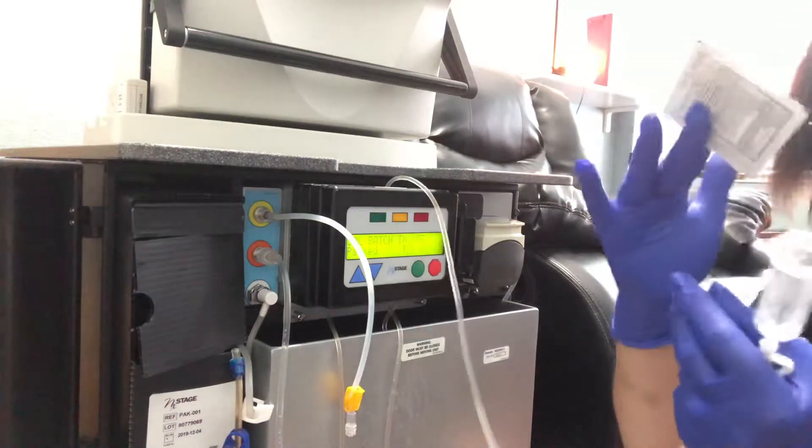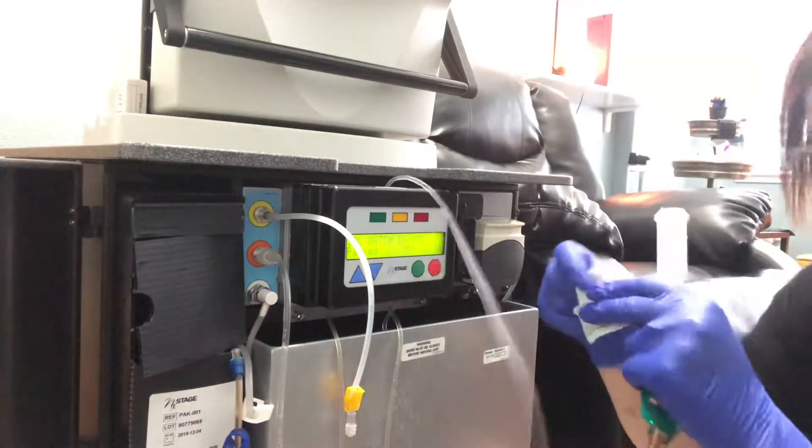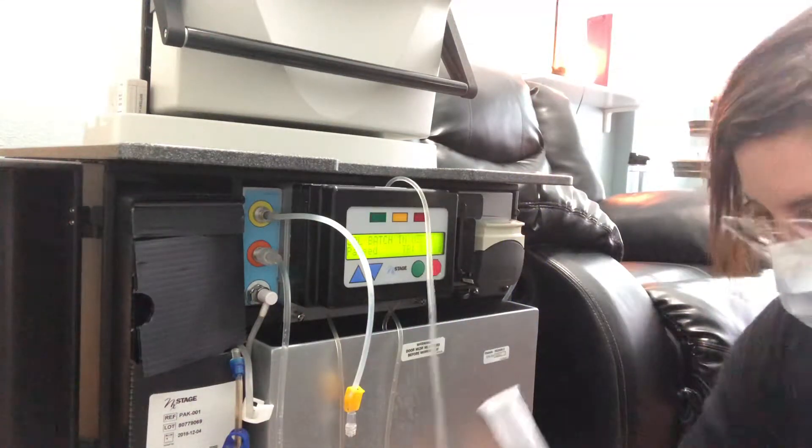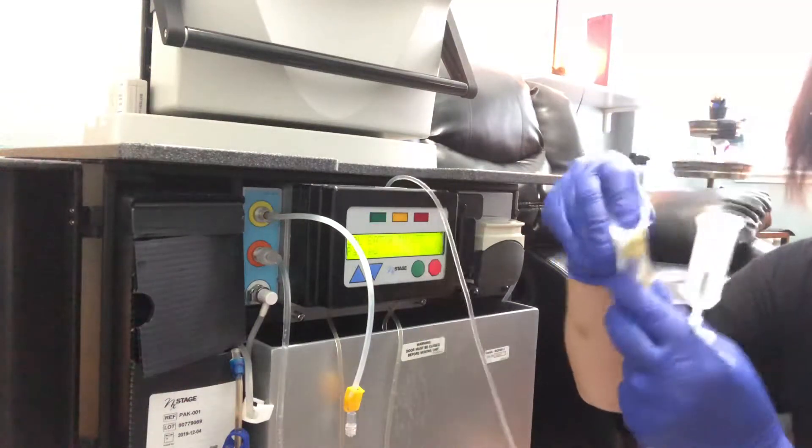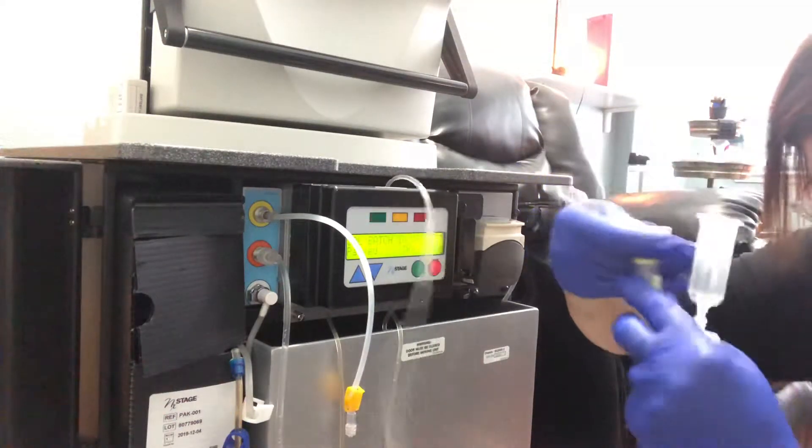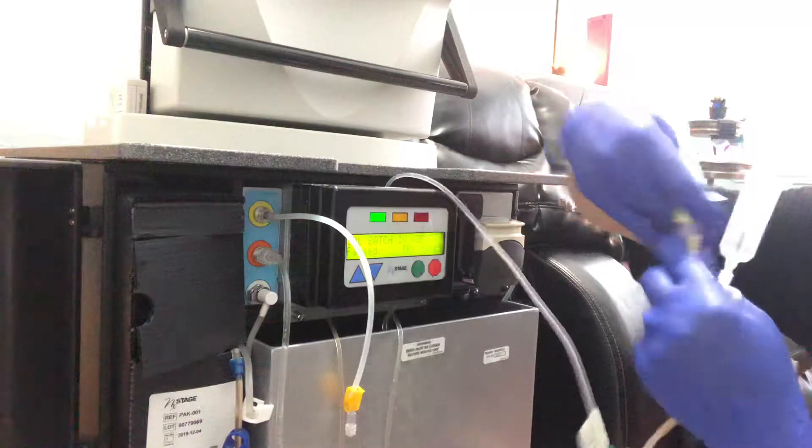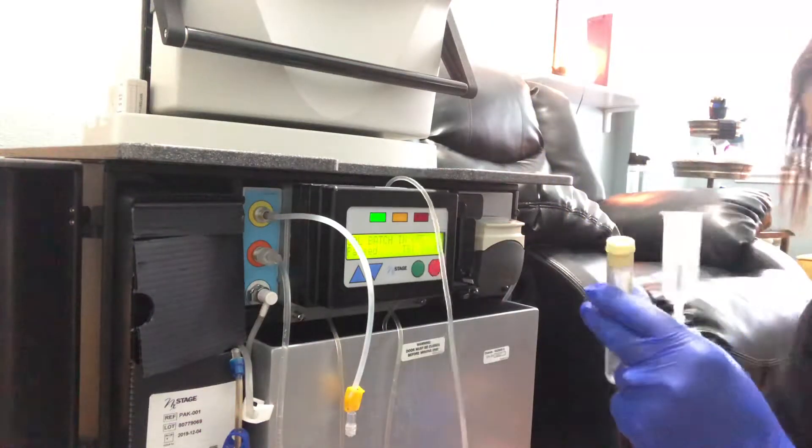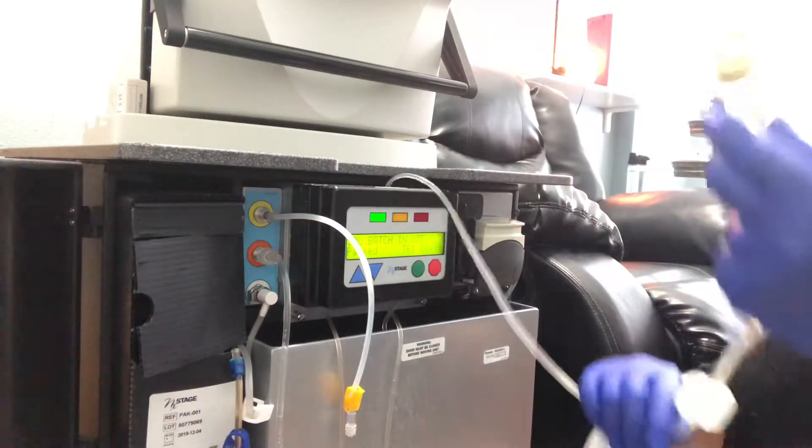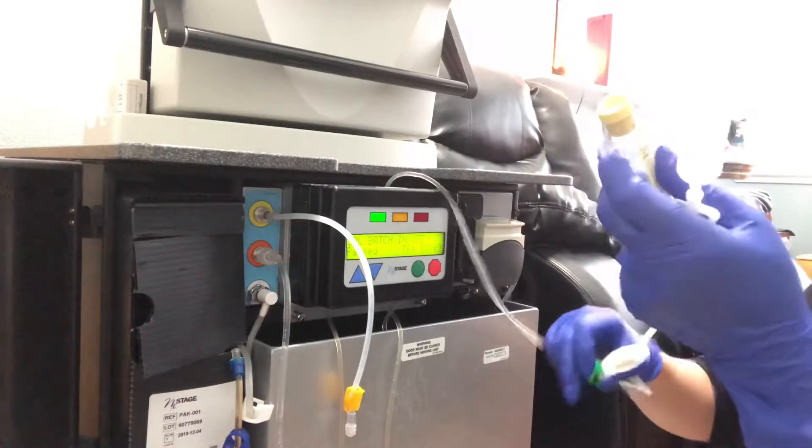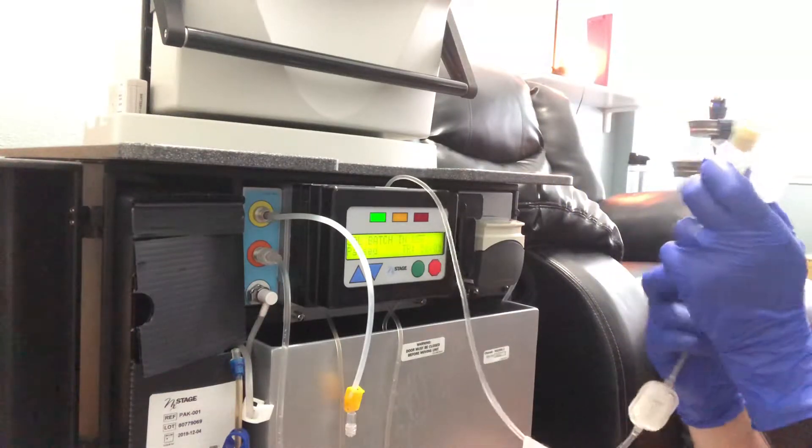Now I'm going to take the alcohol pad and I am going to clean the top of this, back the little test tube holder. I'm going to unclamp, make sure that we're unclamped.